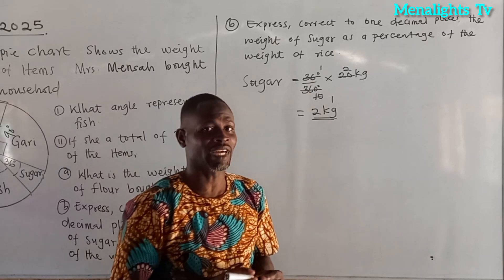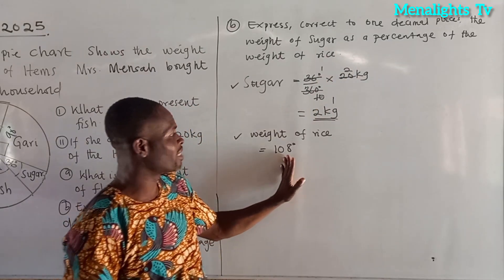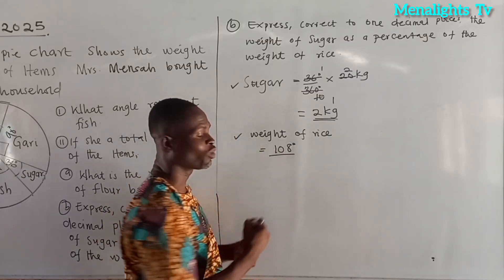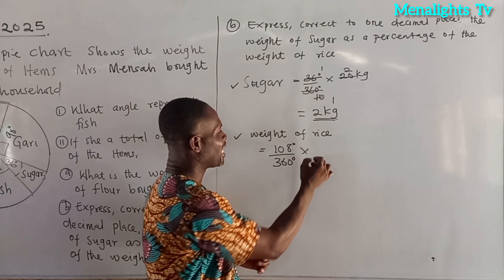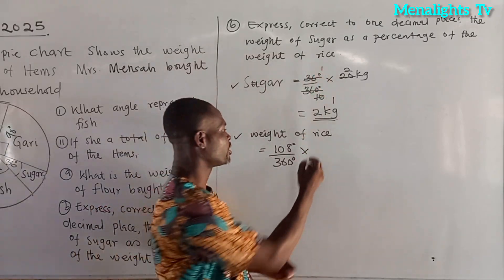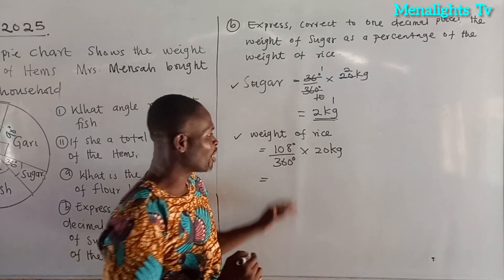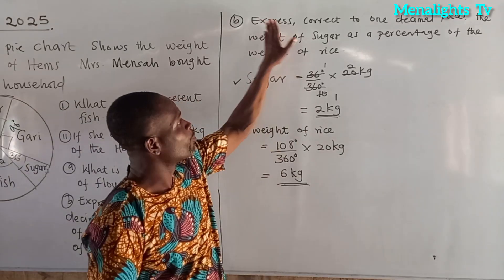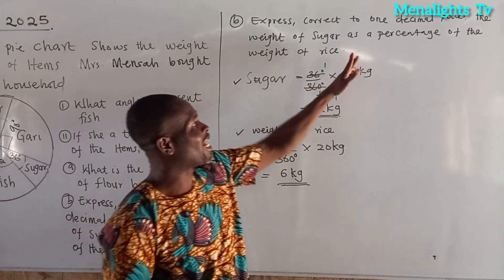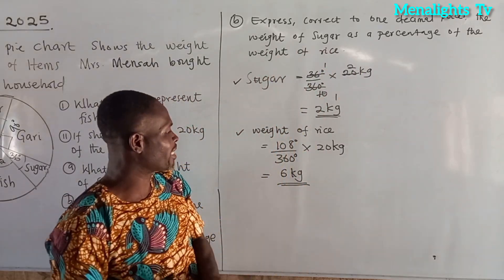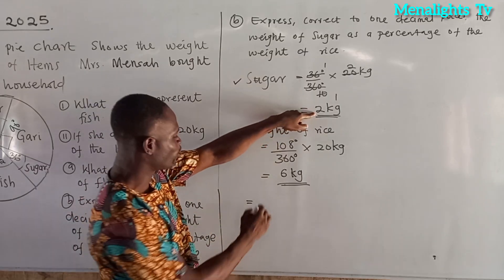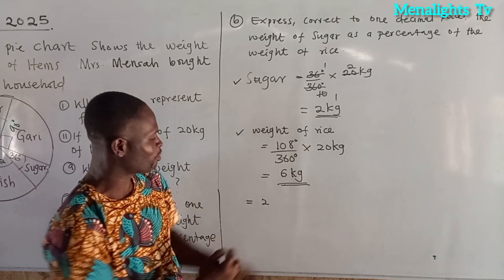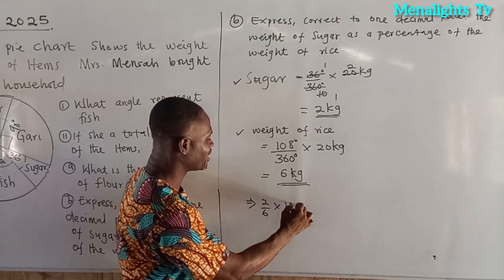Now we find the weight of rice. The angle sector of rice is 108 degrees, so the weight of rice is 108 over 360 times 20 kg. The answer we get is 6 kg. To express the weight of sugar as a percentage of the weight of rice: that is 2 kg over 6 kg, times 100%.